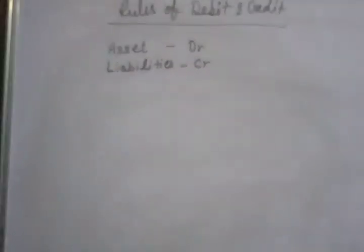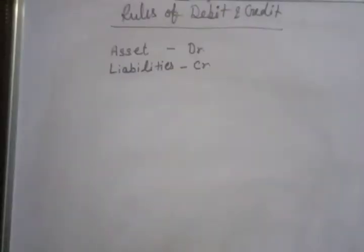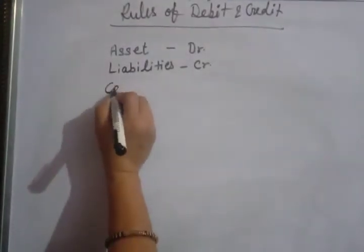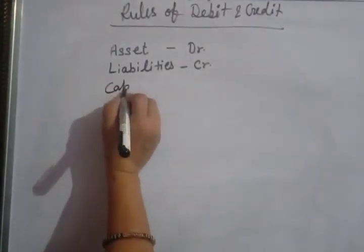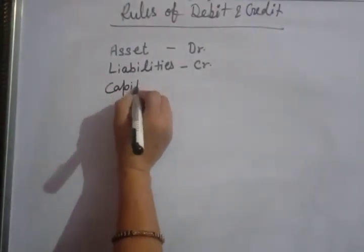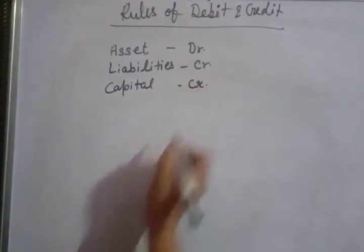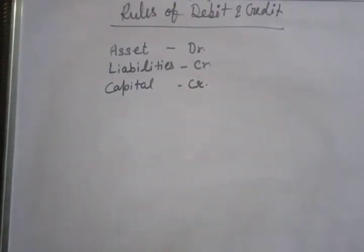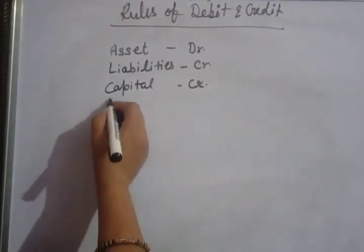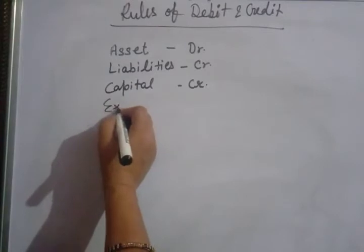Asset equals liability plus capital. If assets are on the debit side, then liabilities are on the credit side. Liability and capital are on the same side. So capital balance is also credit.